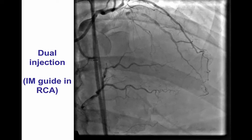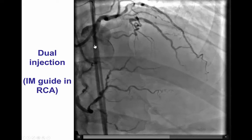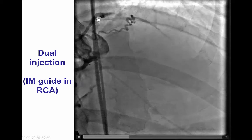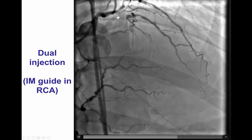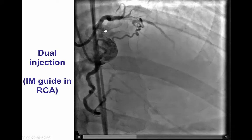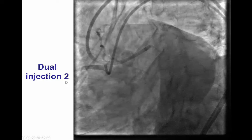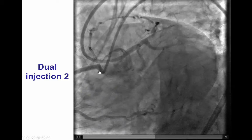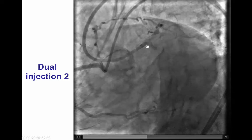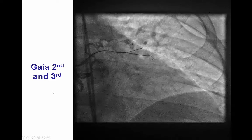We now performed a dual injection during attempts to recanalize this lesion, achieving better filling given the larger size of the guide catheters. Now we can see the anticipated course of the LAD, although the proximal cap does remain blunt, making it a little harder to enter into the occlusion. Here is the dual injection in the caudal view demonstrating a potential course of the vessel, but still there is no nub and there is ambiguity in the proximal cap.